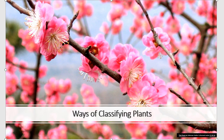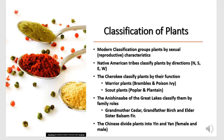Ways of classifying plants: modern classification groups plants by sexual reproductive characteristics. Some Native American groups classify plants by directions such as north, south, east, and west. The Cherokee, for example, classified plants by their function — they had warrior plants such as brambles and poison ivy.